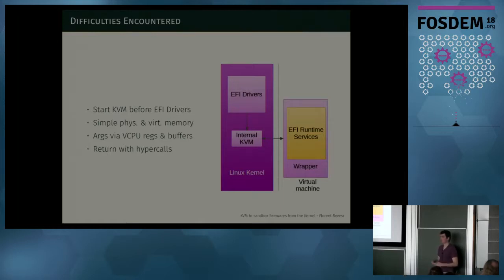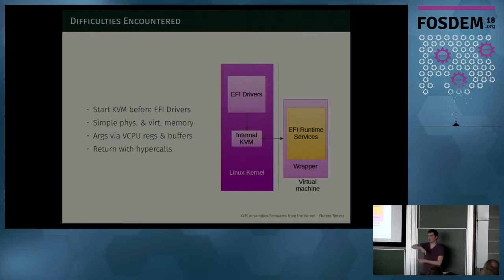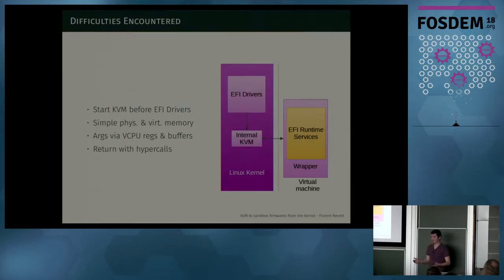How do you call a function inside a VM? When calling an EFI runtime service from the kernel context, it's just like a C function call — you jump to the address with arguments in registers. But with a virtual CPU, you need to manually put arguments into the virtual CPU's registers. For the return, the virtual machine can't just jump back into kernel code, so there's a wrapper inside the virtual machine that runs a hypercall to tell the kernel it's done. If there's a fault inside the virtual machine, there's a fault handler with a special hypercall, and the EFI drivers from the Linux kernel can revert properly.